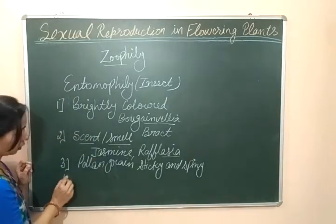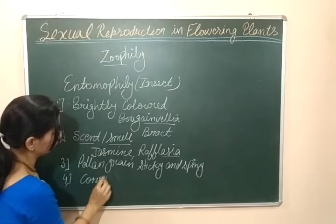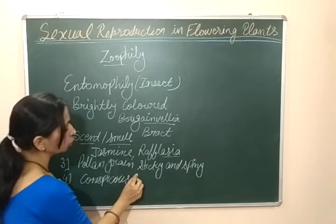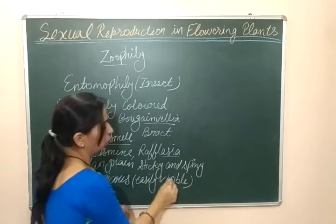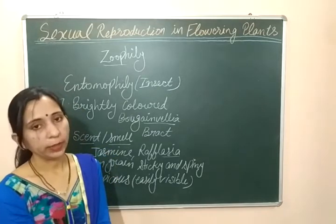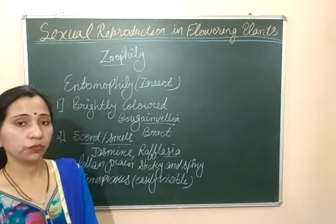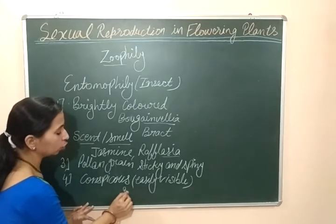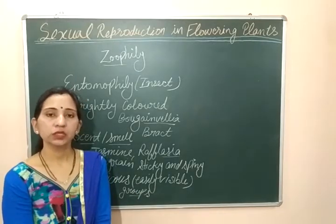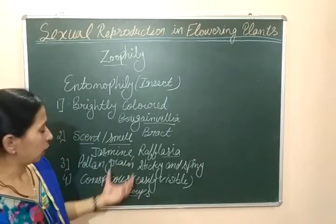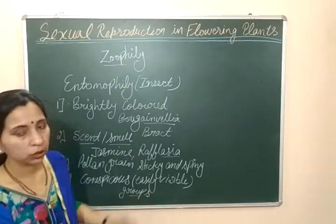Next, we will discuss that the flowers are very conspicuous, meaning they are easily visible. In the case of flowers which do entomophily, the flowers are very conspicuous so that they can be easily seen by insects and insects can come closer to them. Otherwise, small flowers are present in groups. For example, in the case of sunflower, different flowers are arranged in the form of inflorescence so that insects can be attracted for pollination.